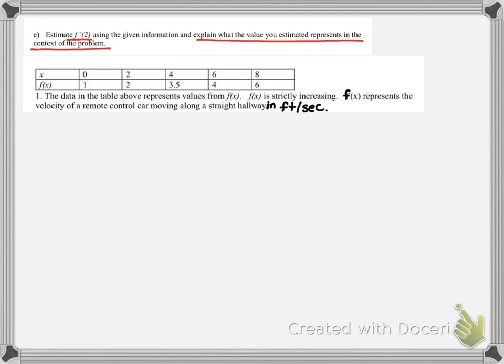And that can always be tricky. So we look at the data, and we're told that f of x represents the velocity of a remote-controlled car along a straight hallway in feet per second. So this is feet per second, and this is seconds.